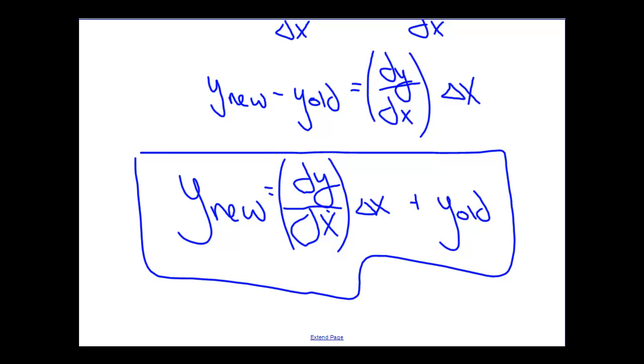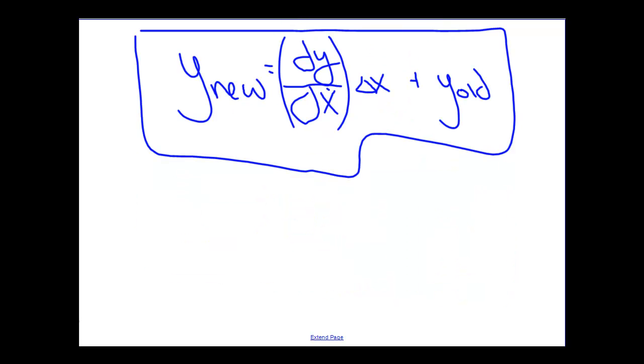And if you think about this, this is very similar to a formula that we should already be very familiar with. That is the formula for the equation of a line in point-slope form. So this is our point-slope form, and you can see the parallels here. You can see where the slope is. That's simply the derivative of our expression. You can see where the change in x is. This difference in x here becomes our delta x.